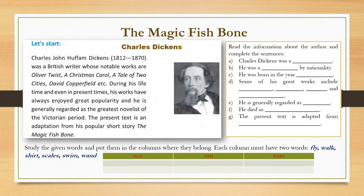His famous works are Oliver Twist, A Christmas Carol, A Tale of Two Cities, David Copperfield, etc. During his lifetime and even in present times, his works have always enjoyed great popularity. He was a very popular writer, not only in his own time but even today, and he is generally regarded as the greatest novelist of the Victorian period.